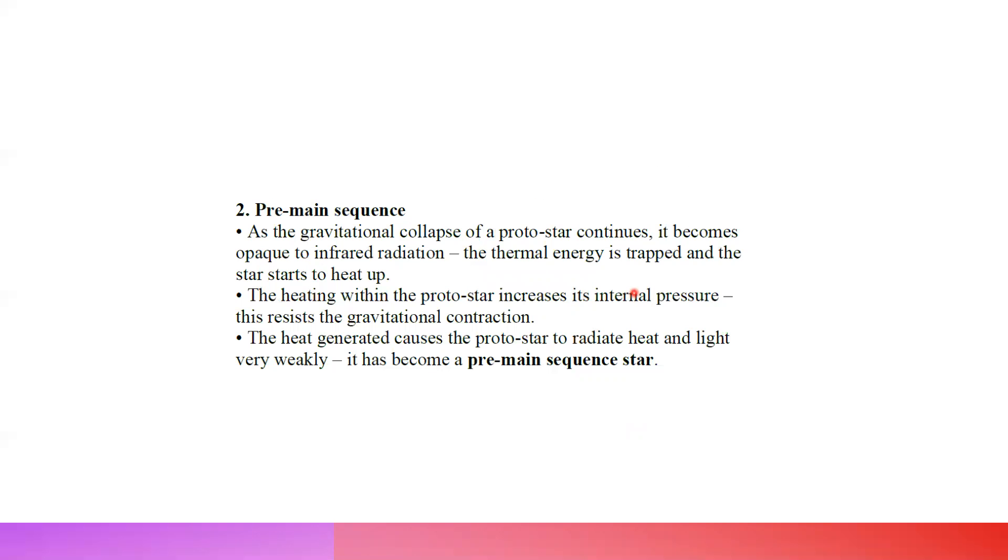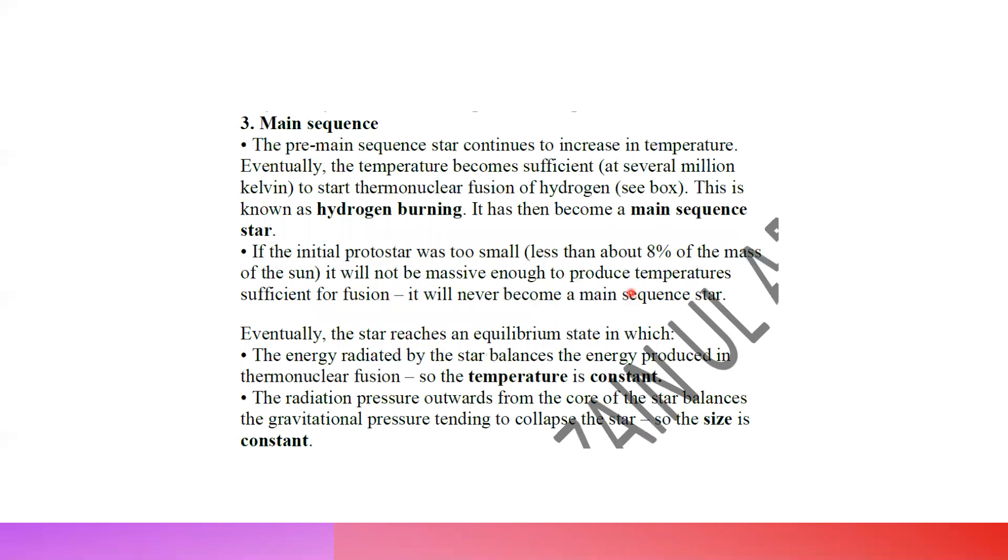Then it turns into a main sequence star. The star continues to increase in temperature. Eventually, sufficient heat is released that causes hydrogen fusion. When hydrogen nuclear fusion starts, it releases energy, and the energy radiated by the star balances with the gravitational pressure. The radiation pressure outward from the core balances the pressure tending to collapse the star, so the size of the star is not changing.